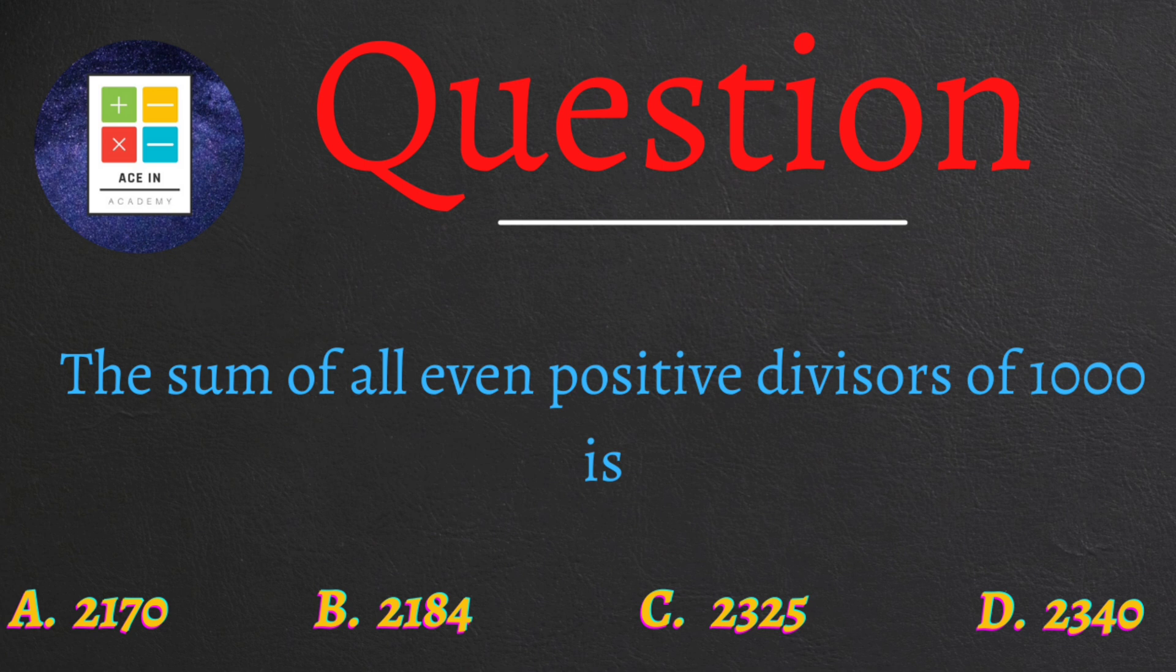The question is: the sum of all even positive divisors of thousand is. We're provided four options: option A 2170, option B 2184, option C 2325, and option D 2340.